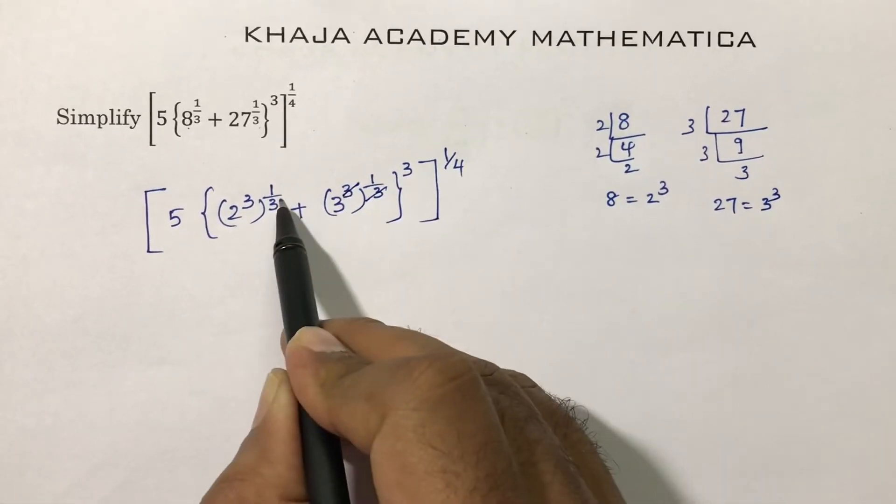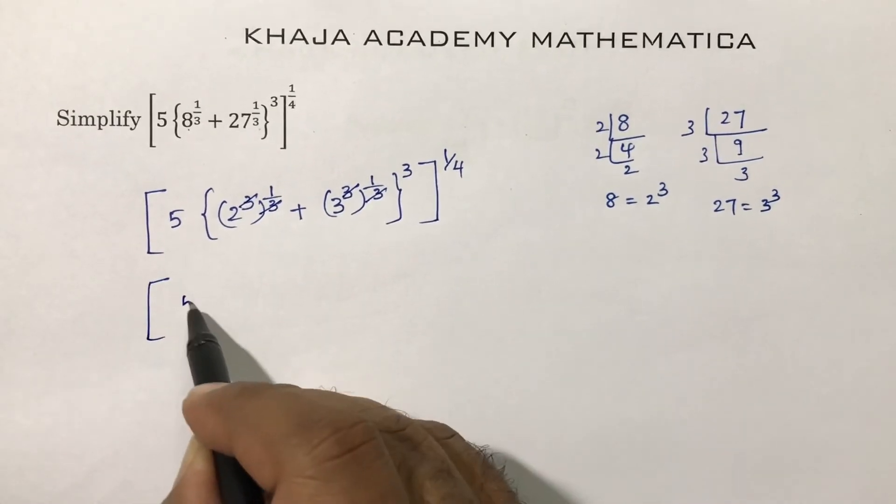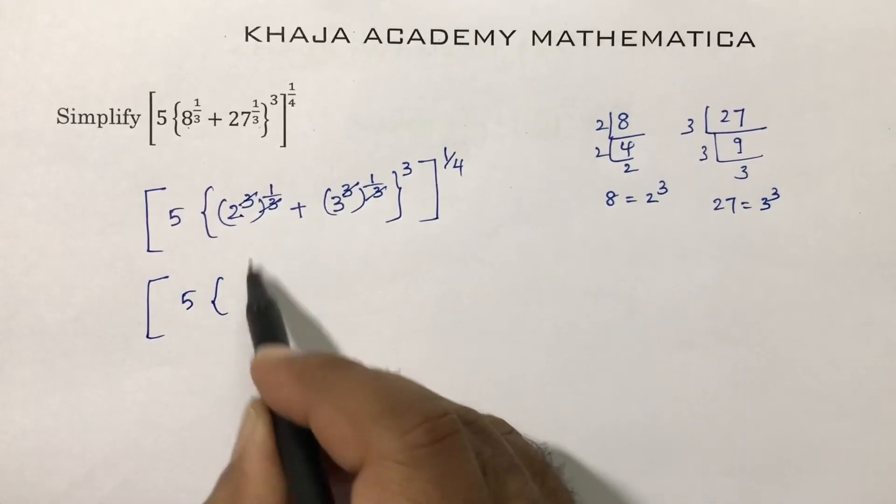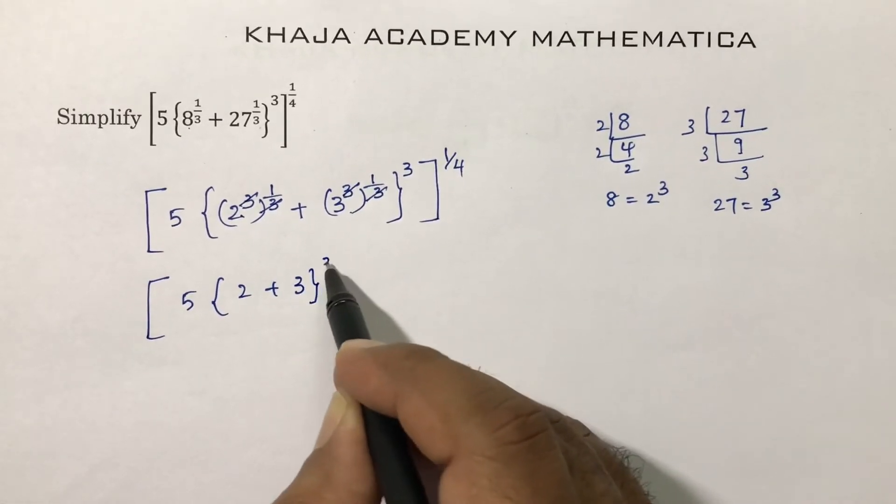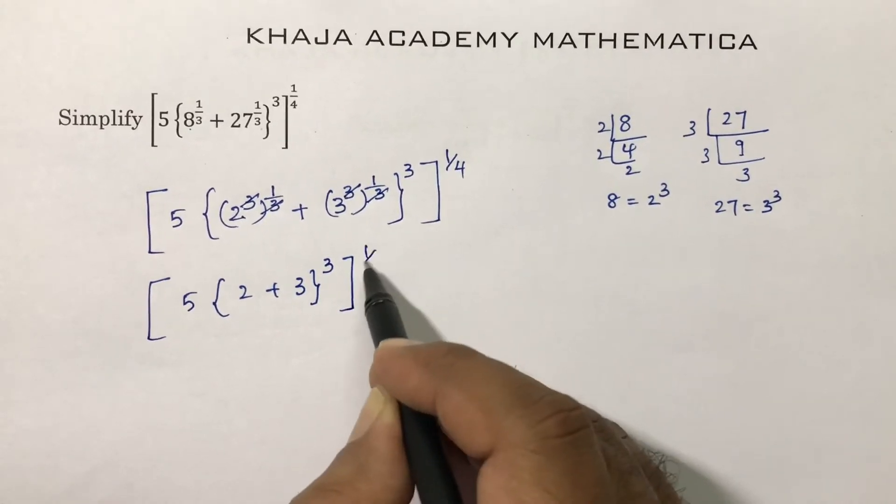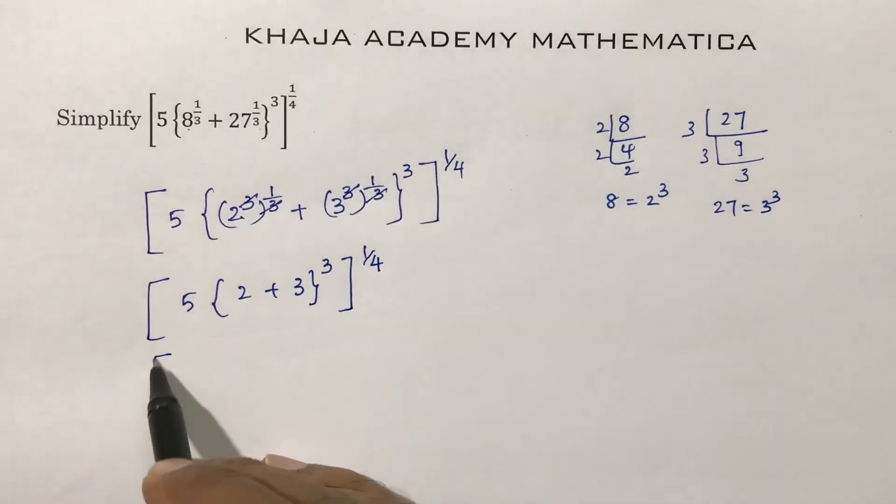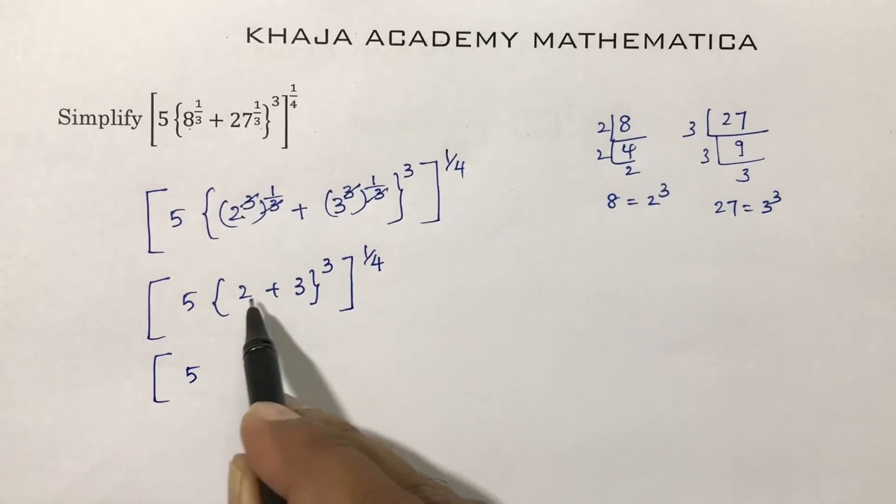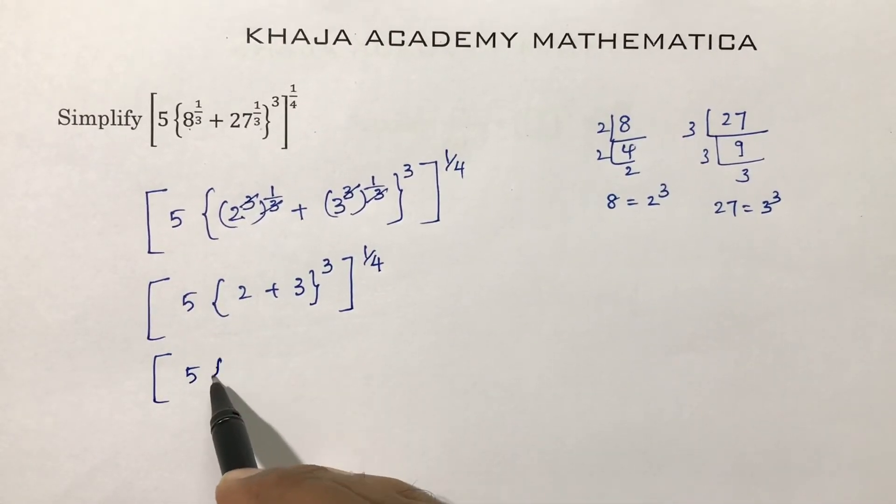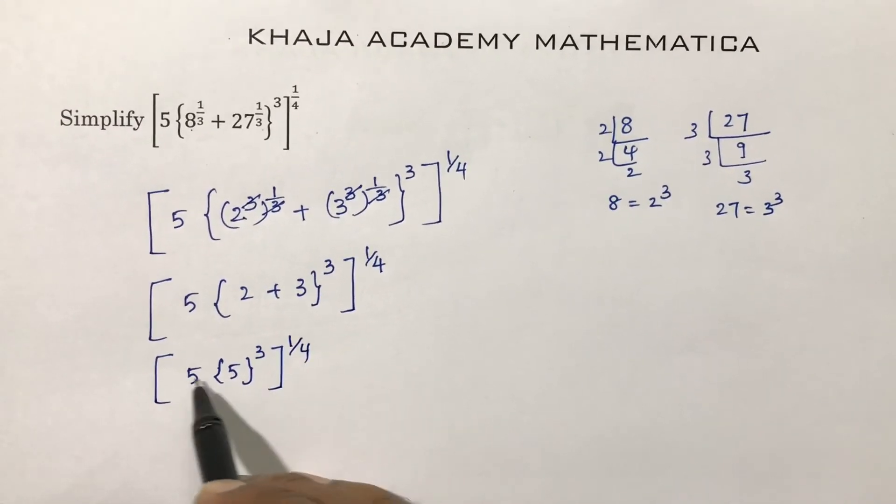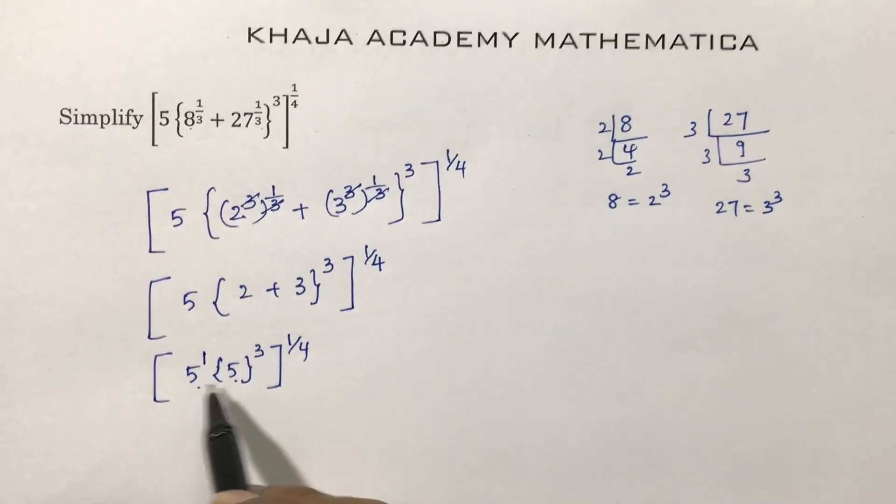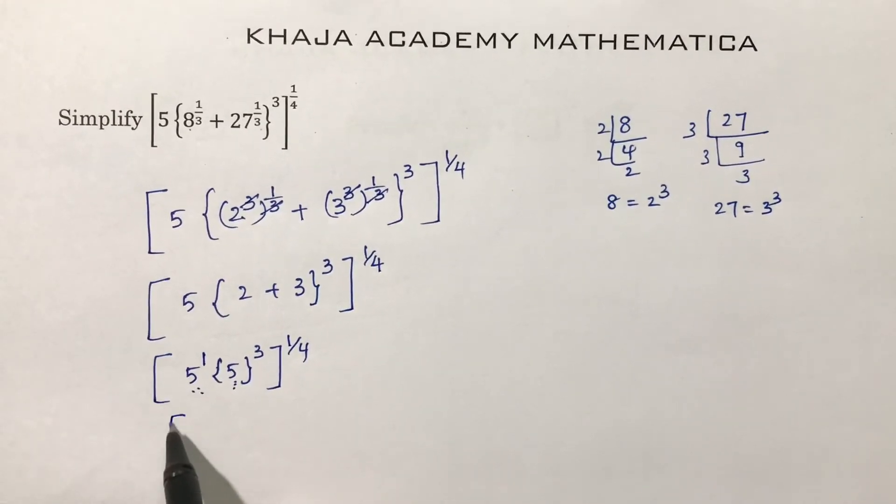3 and 3 cancel. What is left: 5(2 + 3)^3 whole power 1 by 4. 2 plus 3 is 5, power 3, whole power 1 by 4. Here bases are same, so we can add the power: 5 power (1 plus 3), that is 4, whole power 1 by 4.